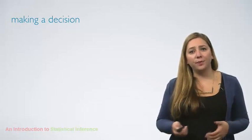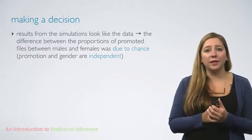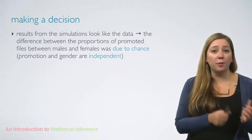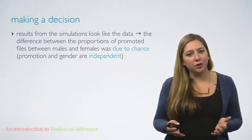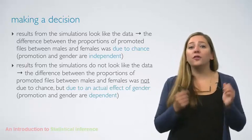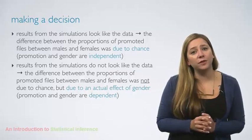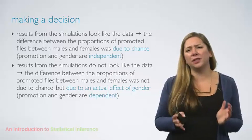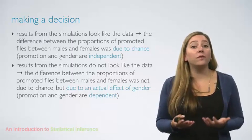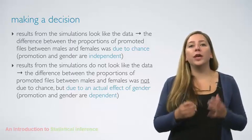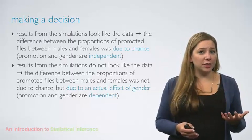So how do we ultimately make a decision? If the results from the simulations look like the data, then we decide that the difference between the proportions of promoted files between males and females was due to chance and that promotion and gender are independent. If on the other hand the results from the simulations do not look like the data, then we decide that the observed difference in the promotion rates was unlikely to have happened just by chance and that it can be attributed to an actual effect of gender — in other words, we conclude that these data provide evidence of a dependency between promotion decisions and gender.